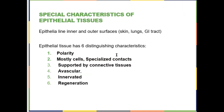First up is epithelia. Epithelia line all of your surfaces. So the surface of your skin is an epithelium, and all of your inner surfaces like the inside of your lungs, your gastrointestinal tract from your mouth all the way to the other end, is lined by epithelial cells. Your blood vessels, all of your glands — any surface is lined by an epithelia.